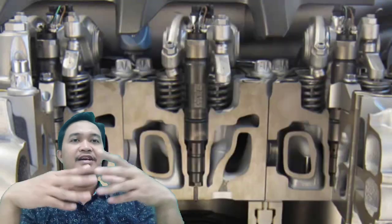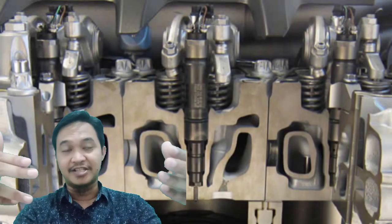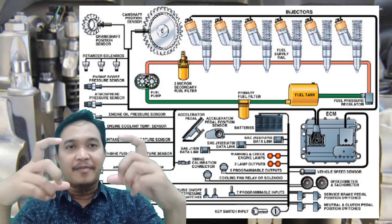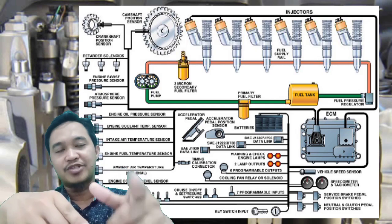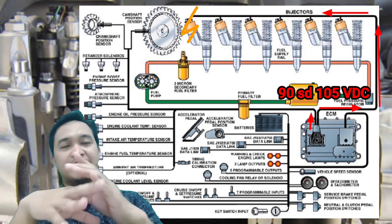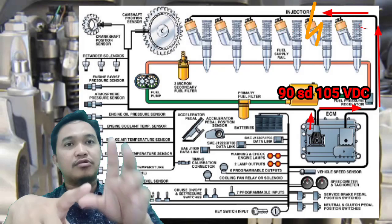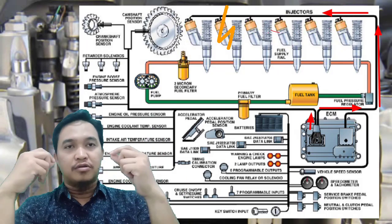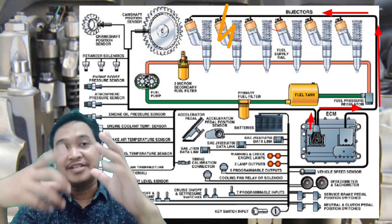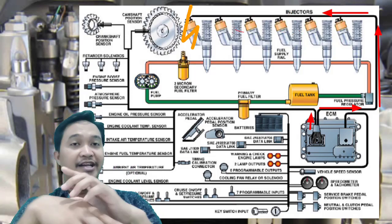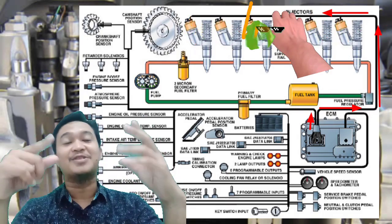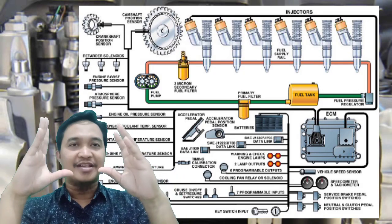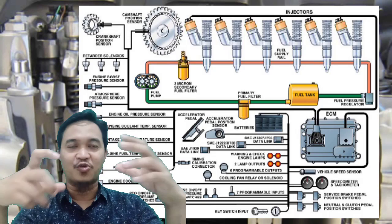Pada EUI fuel system yang kita bahas kali ini, dia dienergize oleh power dari ECM yang mana besarannya adalah 90 sampai 105 volt DC. Cukup besar, dan ini kategorinya sangat besar untuk DC. Jadi jangan sekali-sekali memegang konektor electrical pada solenoid injector pada saat unit atau engine sedang running — itu sangat berbahaya. Di solenoidnya juga sudah ada peringatan, jadi berhati-hati ketika engine running, tidak boleh disentuh.